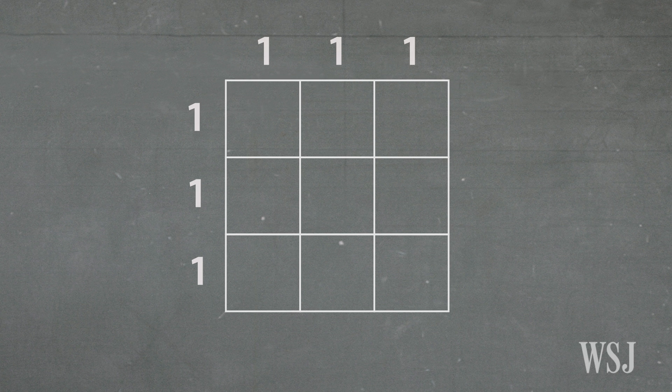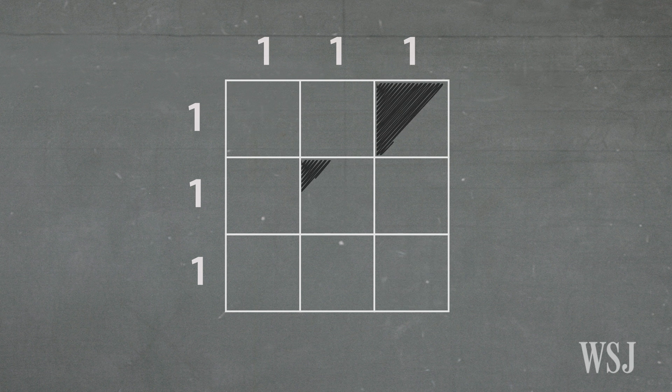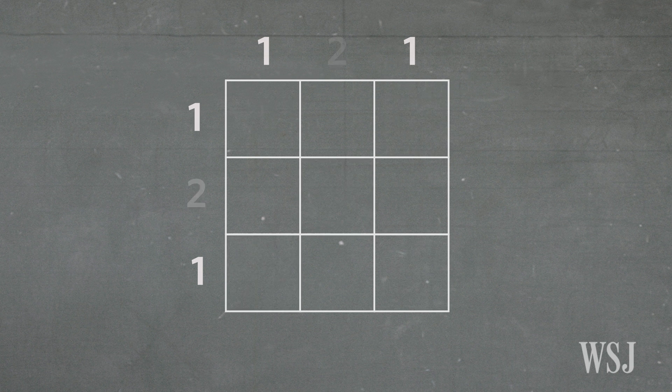It's pretty clear that if we had all ones along the side and top then it would be ambiguous just like in the two by two case. So let's try mixing two in there.